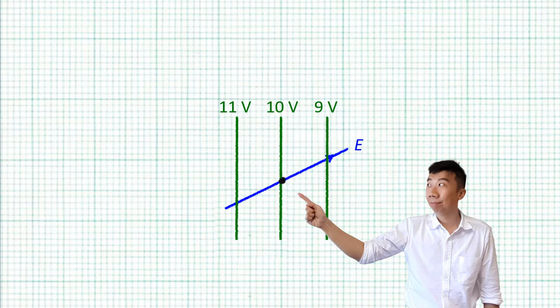Now we can resolve the electric field into two components, one that's perpendicular to the equipotential line, and the other that is parallel along the equipotential line.